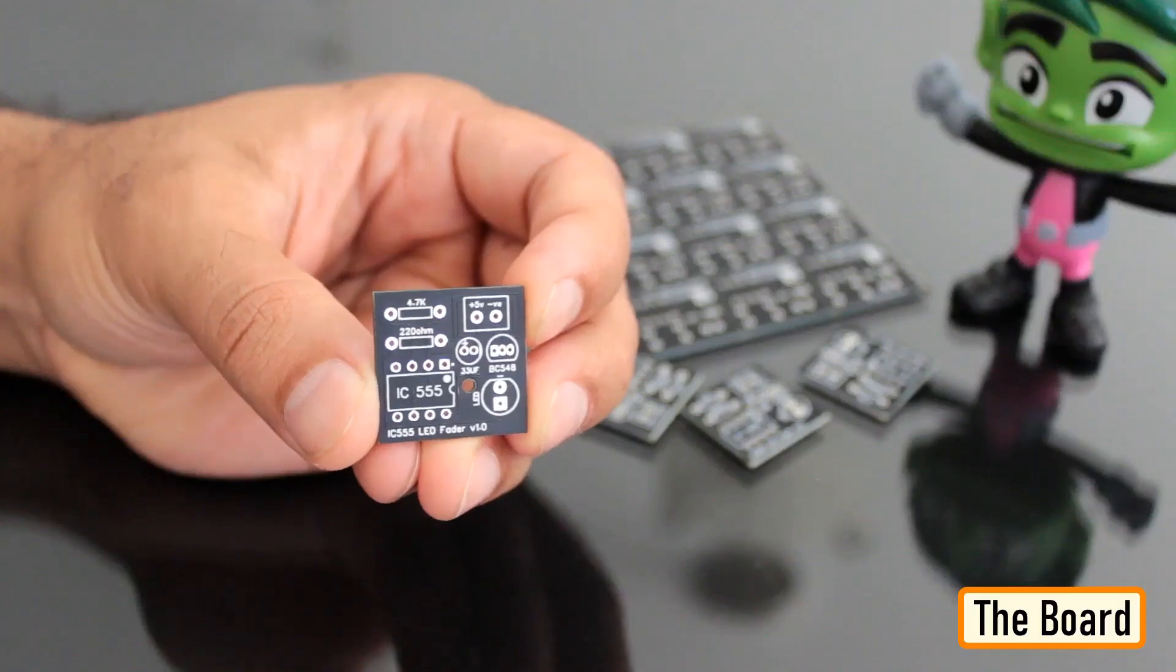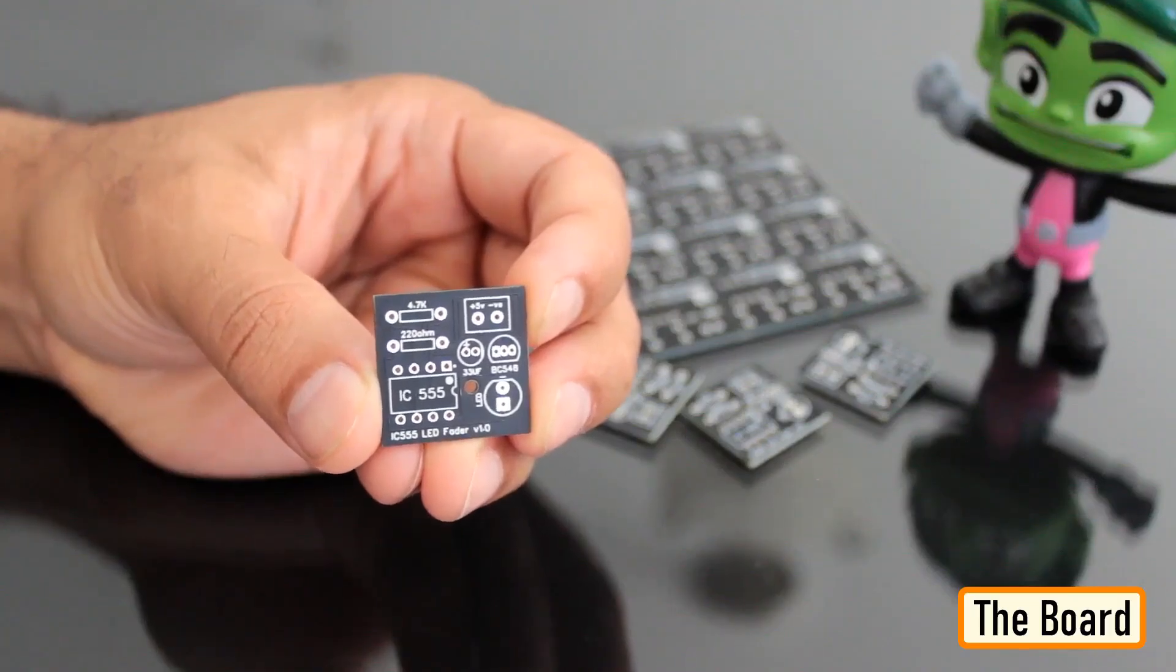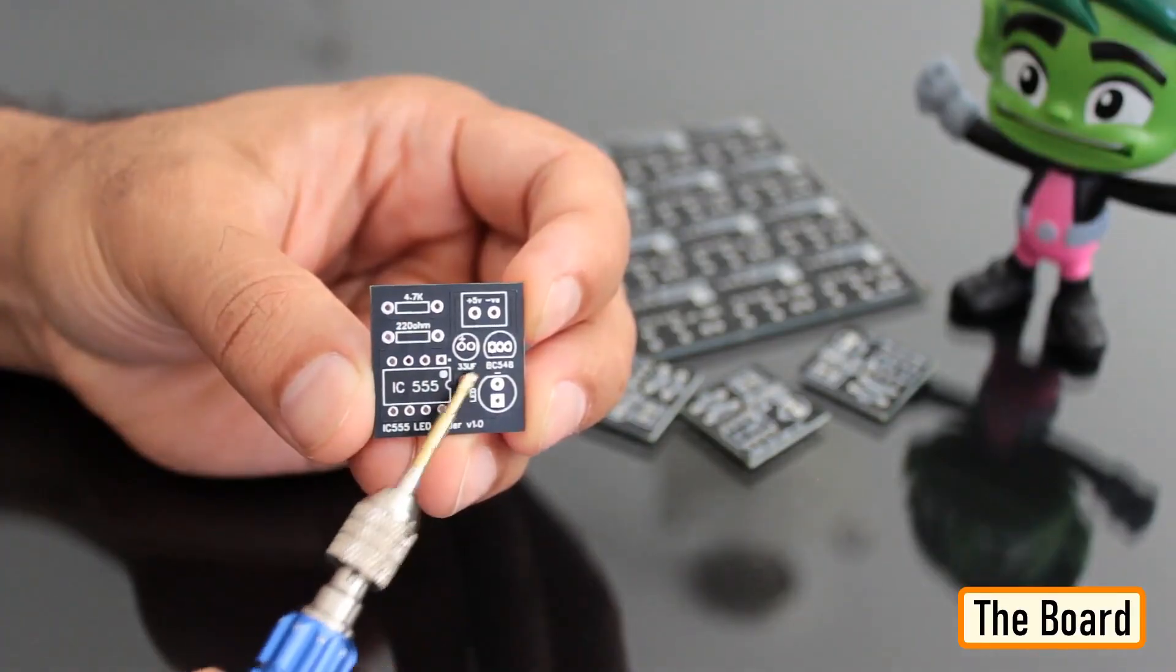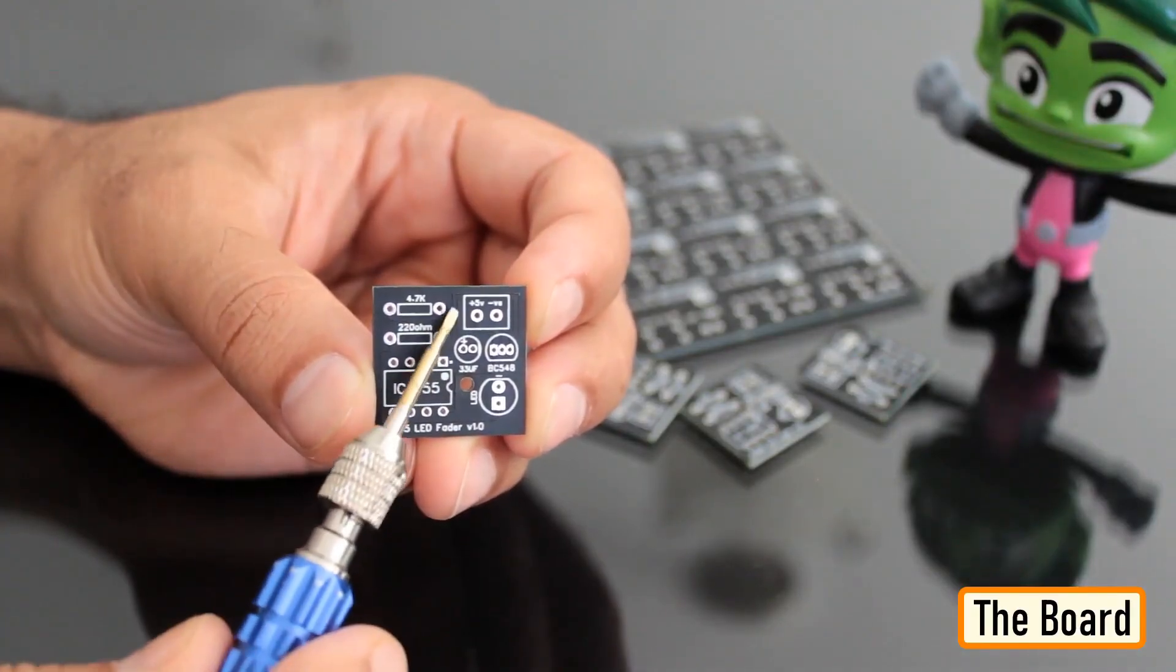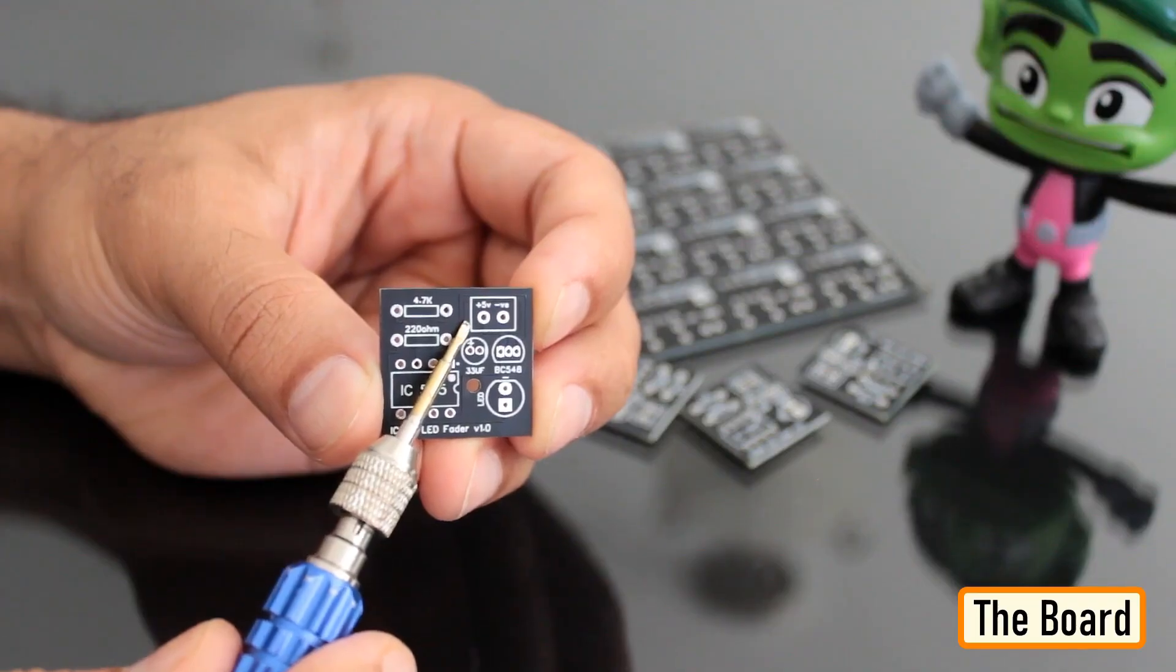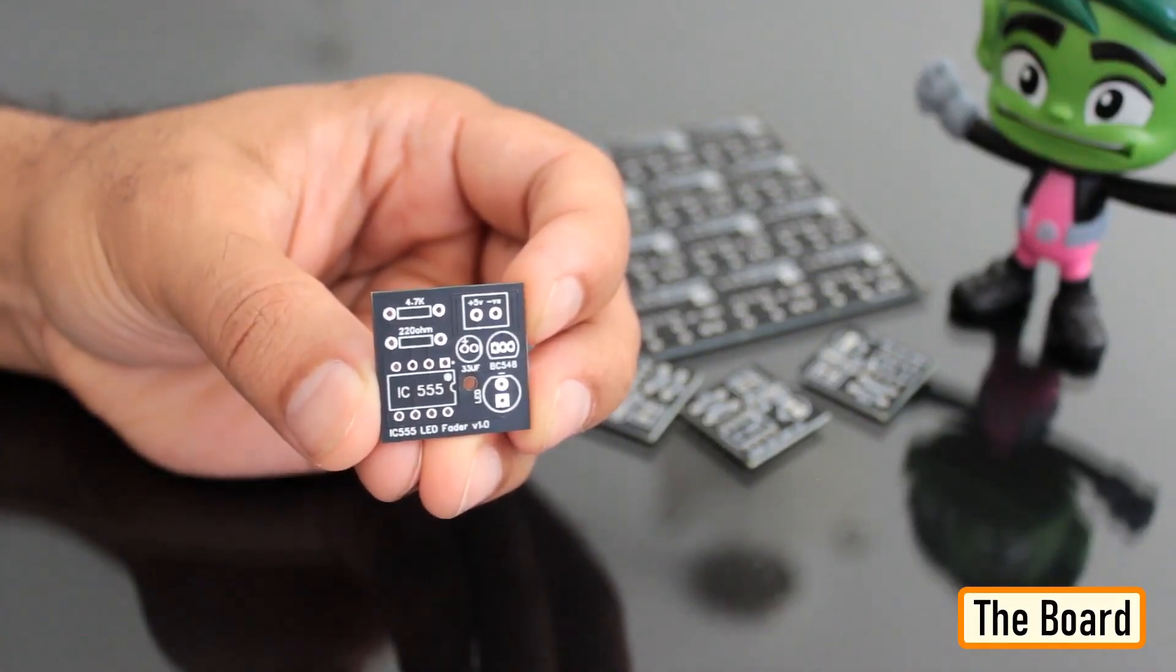To make it easy for you guys, I have created this tiny little 555 LED fader module. After assembling the components, you just need to power this module by providing a voltage between 5V to 15V to fade the LED.